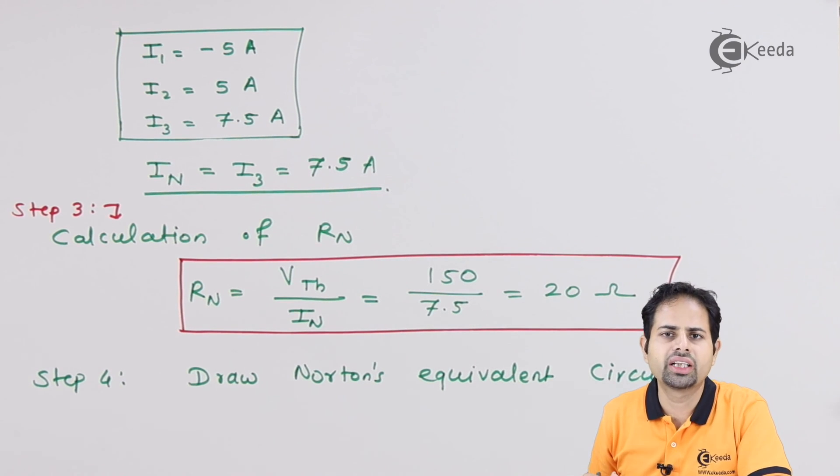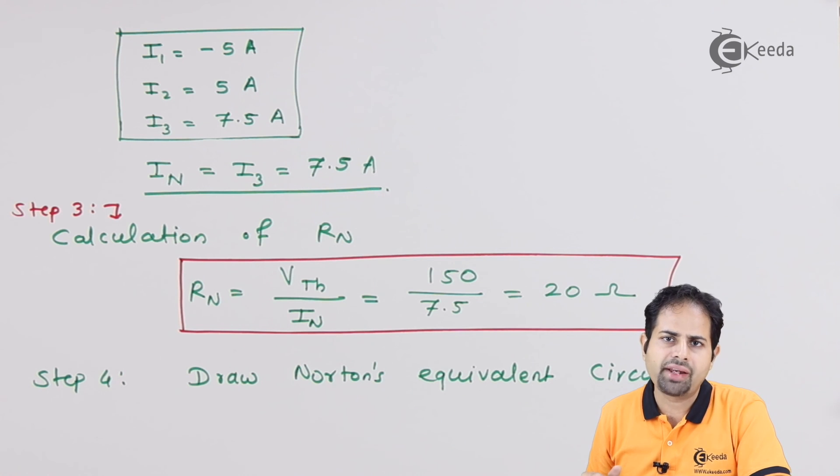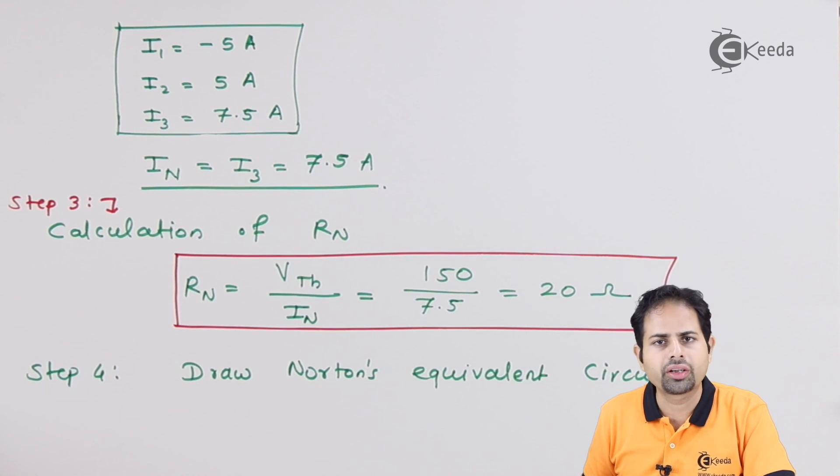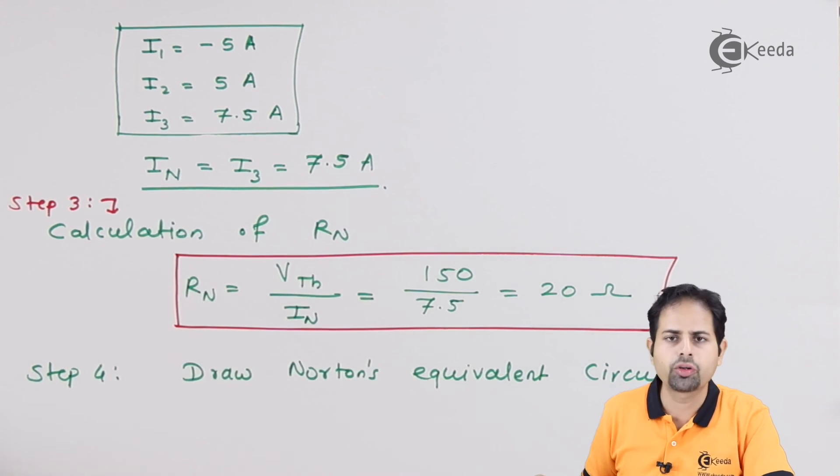And here we come across the last step, that is calculation. And we are done with calculation by drawing the Norton's equivalent circuit. So we'll draw that circuit on the next page, and you can refer that it is 7.5 amperes.